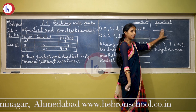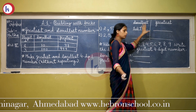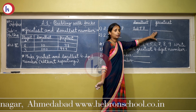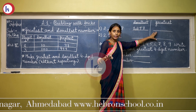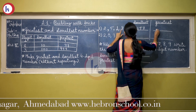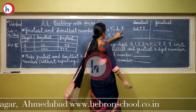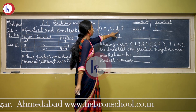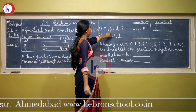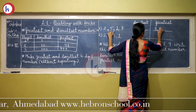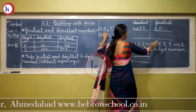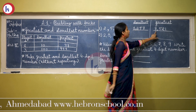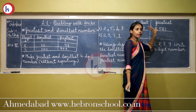When we write the greatest number, just write them in descending order. Which is the greatest digit? 8. Then 5, then 2, then 1. So the greatest number is 8521.